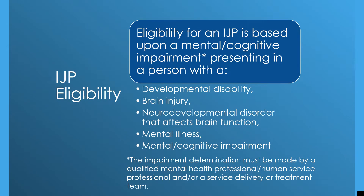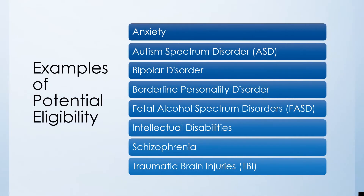IJP eligibility is often based on a mental or cognitive impairment. Examples include a developmental disability, a brain injury, a neurodevelopmental disorder that affects brain function, a significant mental illness, or other diagnosis creating a mental or cognitive impairment. The diagnosis must be made by a qualified professional. Some examples of potential diagnoses that create IJP eligibility are anxiety, autism spectrum disorder, bipolar disorder, borderline personality disorder, fetal alcohol spectrum disorders, intellectual disability, schizophrenia, and traumatic brain injury.